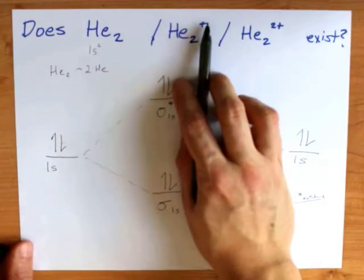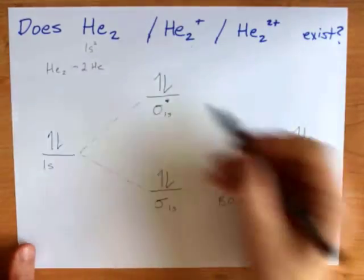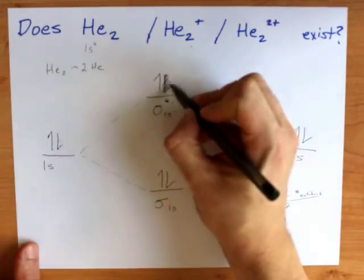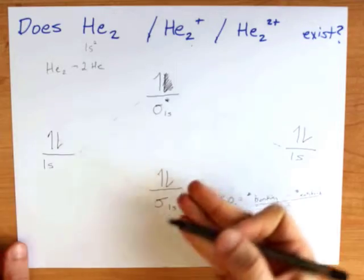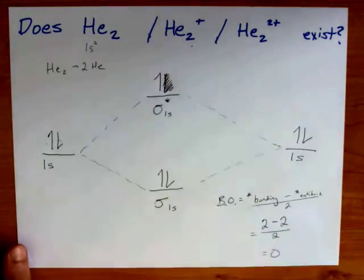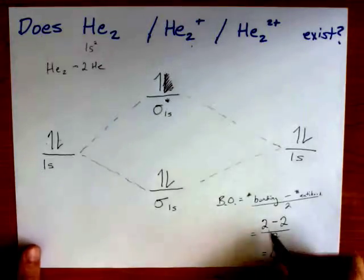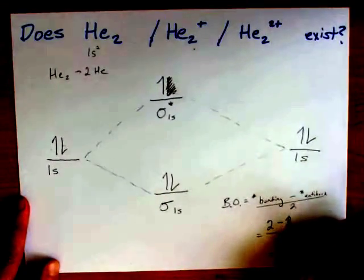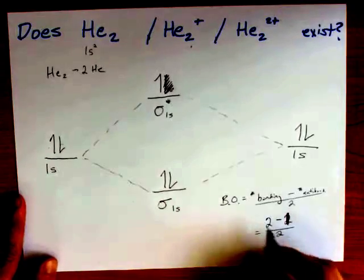He₂ with a plus charge is the same thing except one of these electrons has been removed. We're removing the electrons from the highest energy orbitals first. In any case, that gives us two electrons in bonding orbitals and one electron in an anti-bonding orbital.